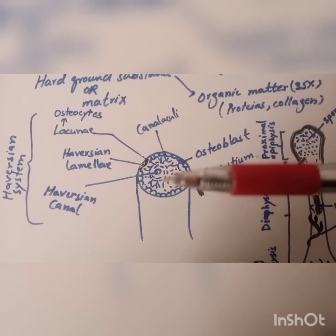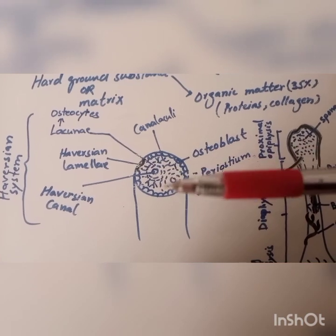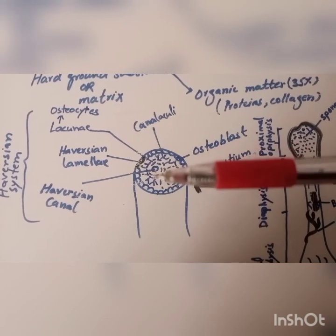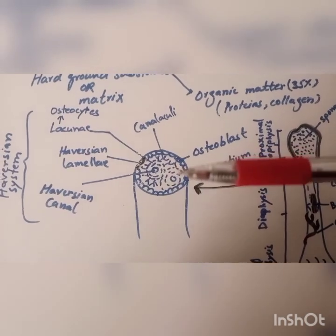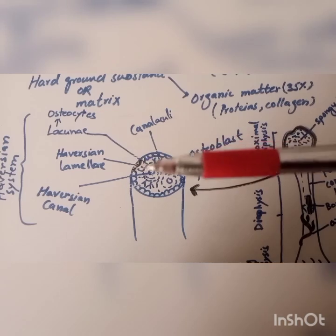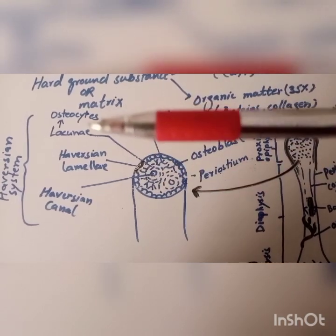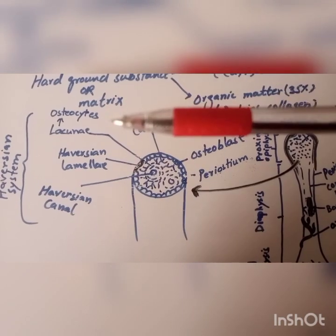The Haversian canal is surrounded by bony plates that are known as Haversian lamellae. Between the adjacent lamellae, there is a space that is called lacuna. Lacuna contains osteocytes.